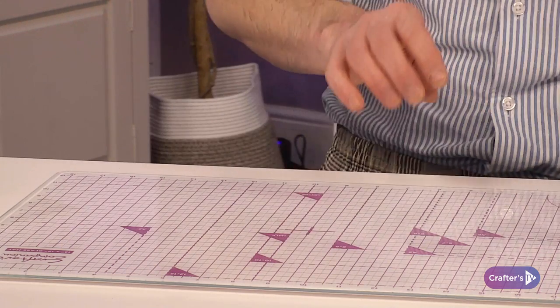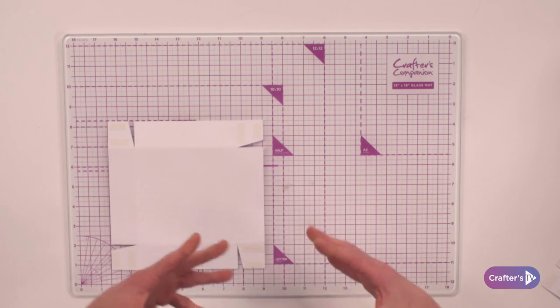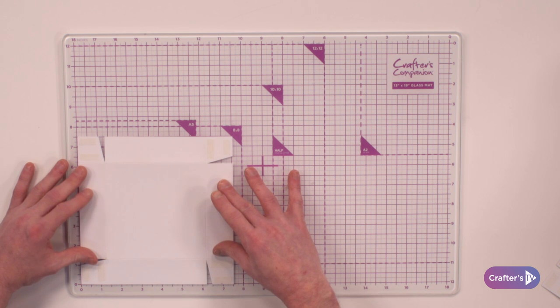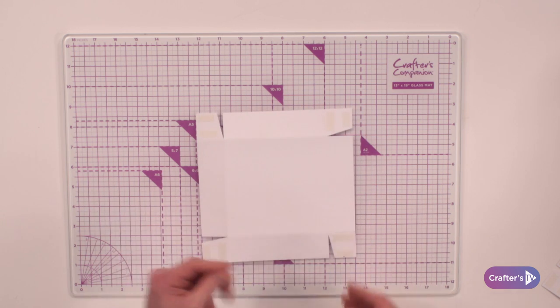So what we're going to do to start with is let's start the box. Now I've already taken some extra white multi-purpose cardstock and I've cut it to seven and a half by seven and a half, and then I've scored it one and a quarter all the way around.